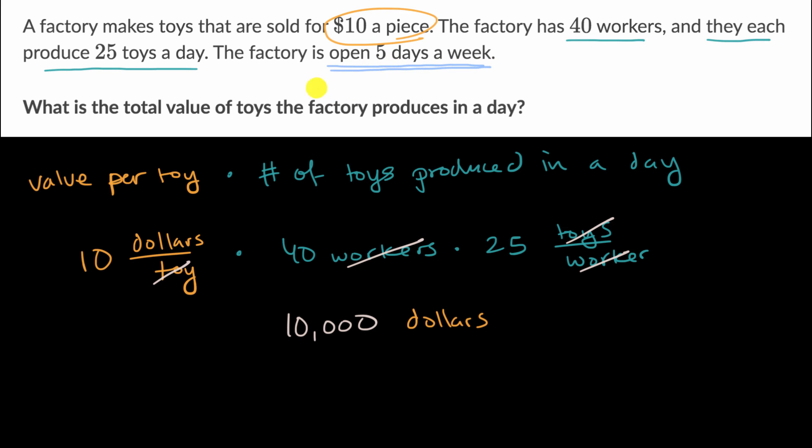That would have been useful if they said, what is the total value of toys the factory produces in a week? Then we would have said their value per day is $10,000, and we could even write it this way per day, and then multiply that times five days in a week. And that would have given us the total value of the production in a week, but that's not what they're asking for. So we don't need that other information. And so this was really just extra information, probably to distract you a bit.